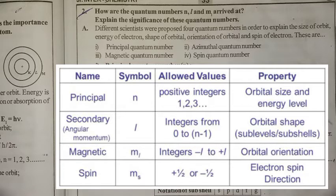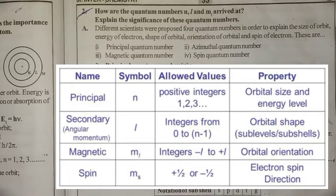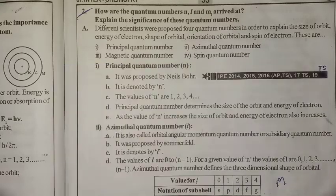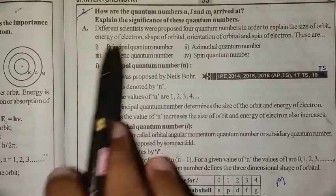Let me ask you one question: write the Zeeman effect, write the Stark effect. Why do we study only quantum numbers? In the public exam we will gain 6 marks. Attached problems carry 8 marks. Now let's take a look at the lesson.